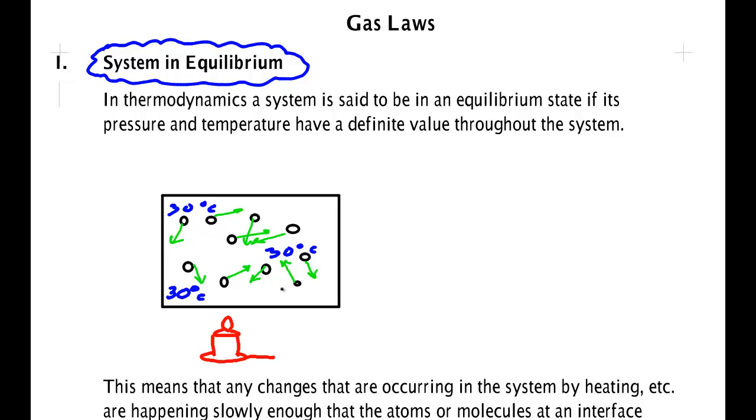Thus it makes sense to talk about the temperature of a gas. If every point of the gas is at a different temperature with a thermometer reading then how can we say that we actually have the gas at a specific temperature. Pressure and temperature have a definite value throughout the system. And if that's the case the state is said to be an equilibrium state.